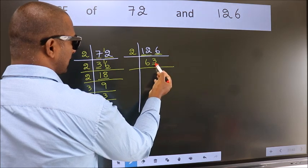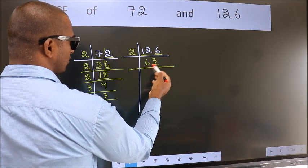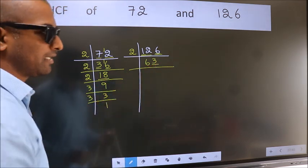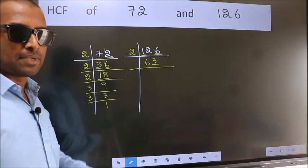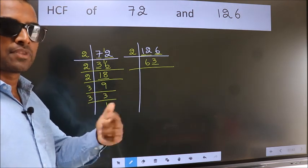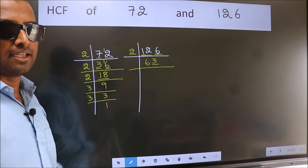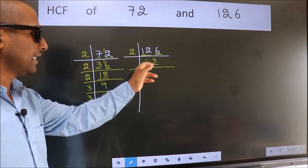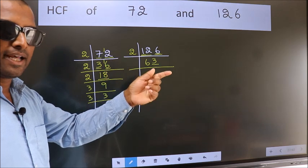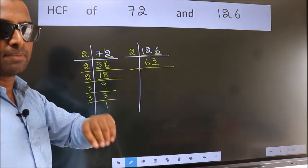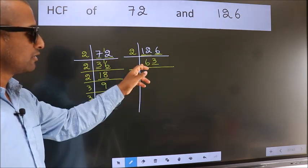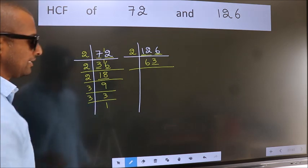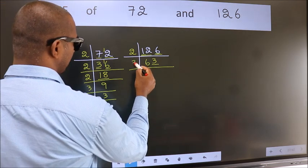Last digit 3, not even, so this number is not divisible by 2. Next prime number 3. To check divisibility by 3, for that we should add the digits. 6 plus 3, we get 9. Is 9 divisible by 3? Yes. So, this number also divisible by 3. So, take 3.